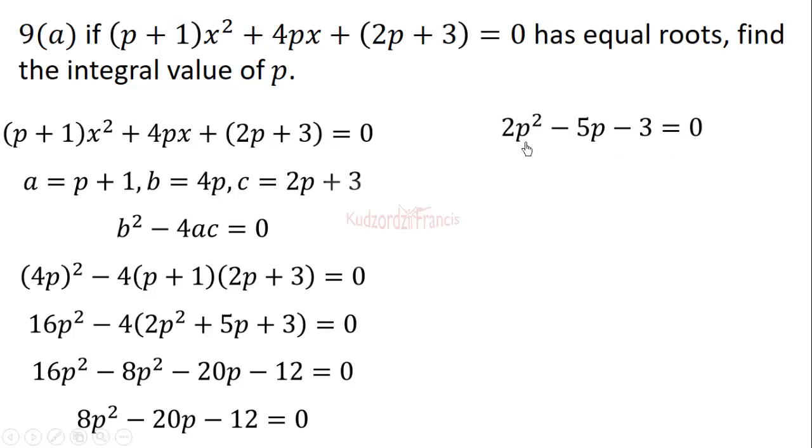Now we factor this. We can split the middle term: -6 and 1 multiply to give -6, and add to give -5. So we split the middle term and factor to obtain (p - 3)(2p + 1) = 0.